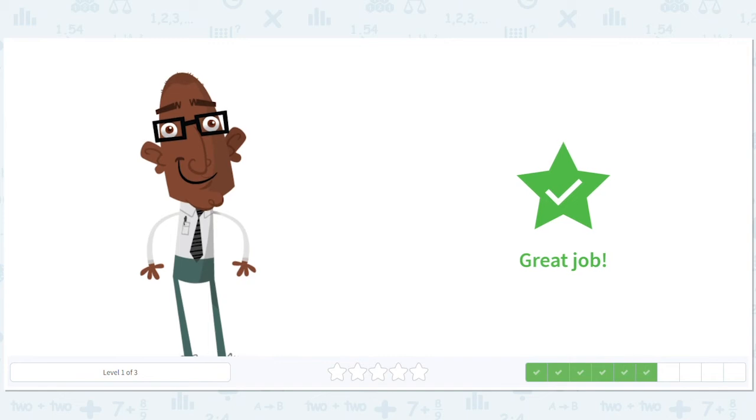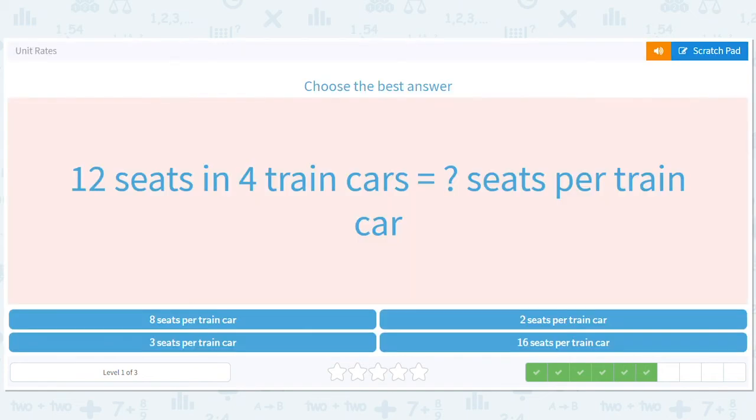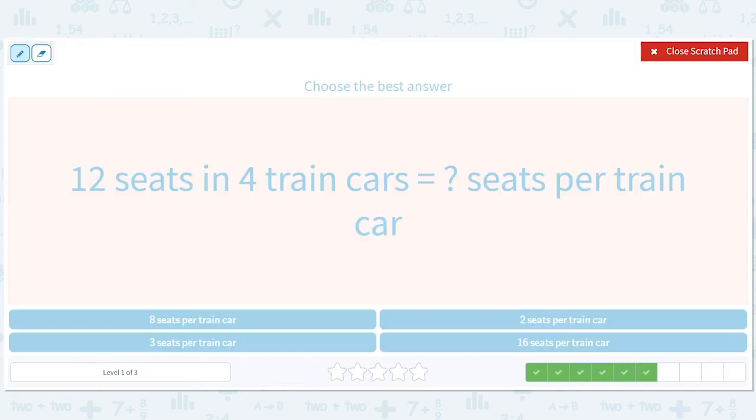That's not as exciting as what we're doing now. Twelve seats in 4 train cars, speaking of transportation, how many seats per train car? 12 divided by 4 is 3. Now let's draw a picture for this one, why not?